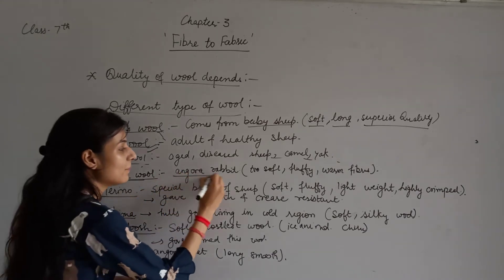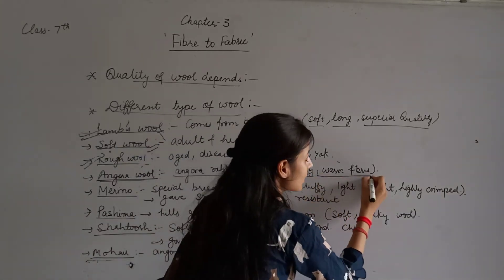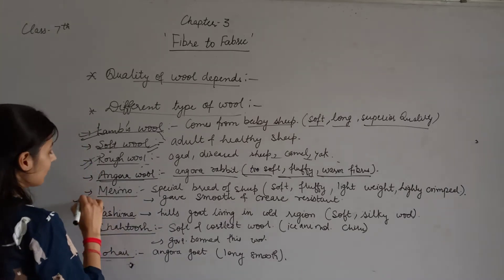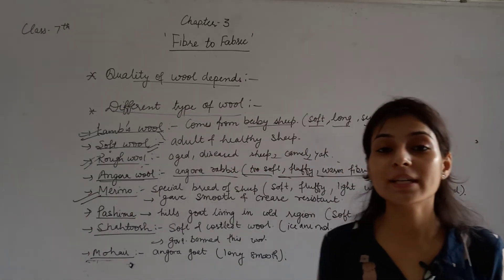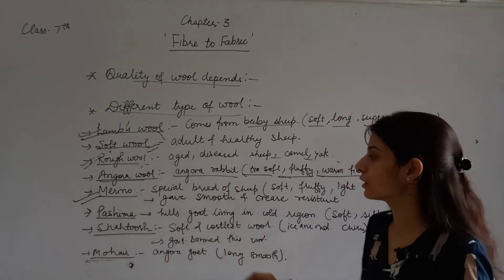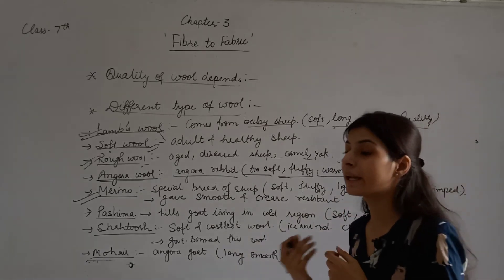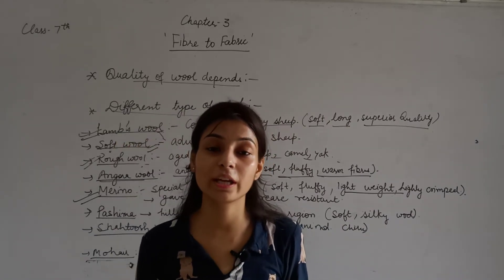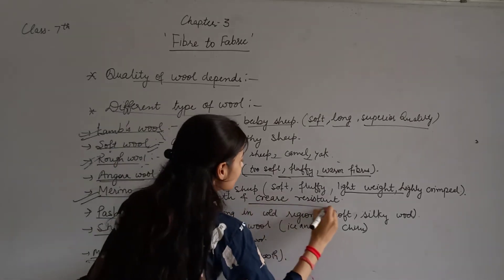We get Angora wool from Angora rabbits. It is soft and fluffy, and the fiber is very warm. Next is Merino wool, which we get from a special breed of sheep. Merino wool is soft, fluffy, fine, and light. It is highly crimped — the more crimps present, the better the wool quality. Merino wool is smooth and freeze-resistant.